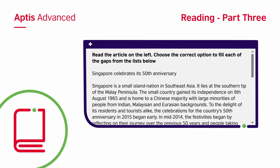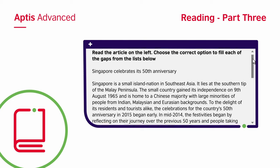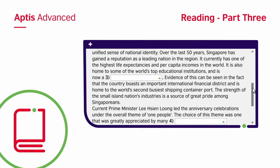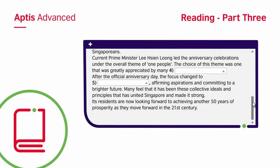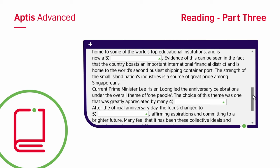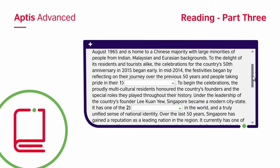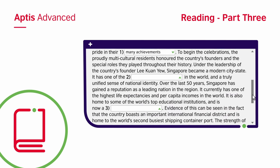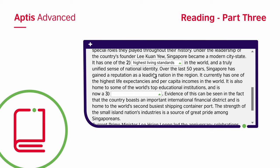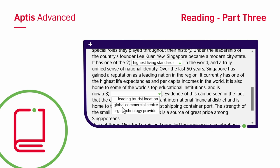In the third part, you will read a short text with missing gaps. You must choose the right word or phrase from the drop-down list to complete the gaps. Make sure you read the whole text before trying to answer. Remember that this isn't a grammar test, so all the options can fit grammatically into the sentence. You need to understand the whole text in order to choose the correct answer.